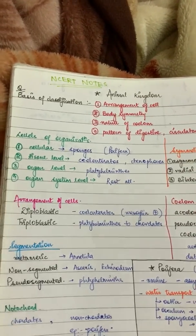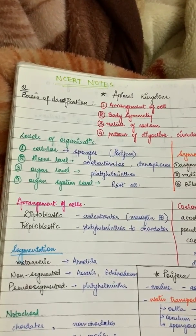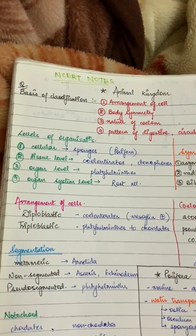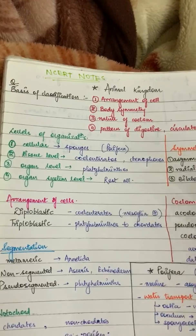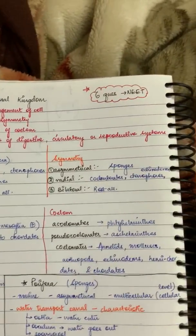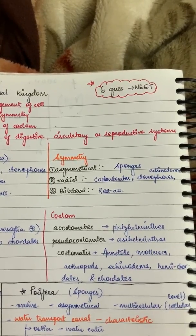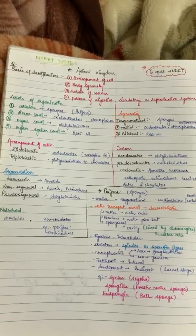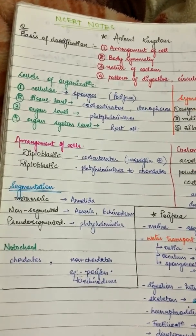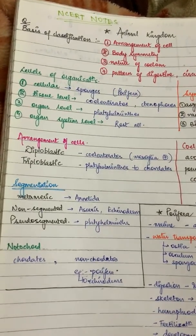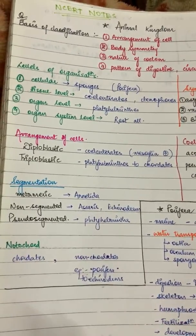One question will come from the level of organization. I have 4 levels - like cellular level, tissue level. For example, sponges - you will be asked which level of organization does this belong to. You should remember the example for each level. Likewise, you need to remember the symmetry and the phylum examples. If you make questions and understand them properly, the multiple choice questions will become very easy.